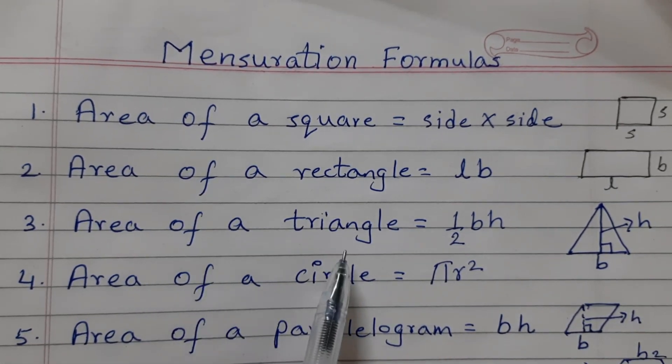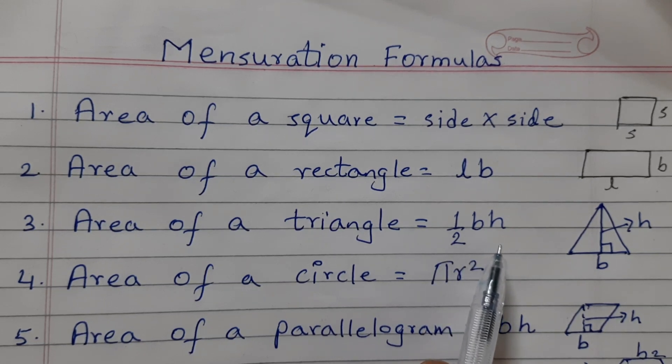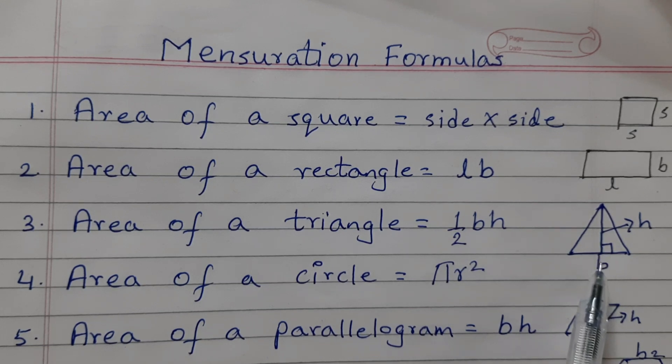Area of a triangle is equal to half into base into height. So B stands for the base and H is the perpendicular distance from the opposite vertex.